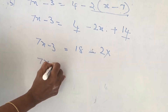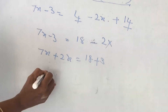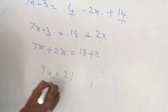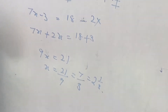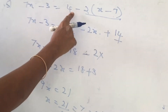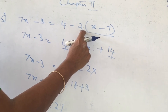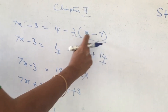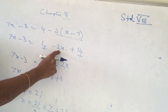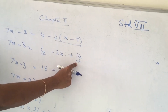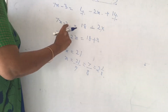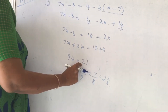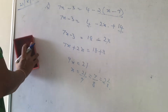Bring x terms to the left side and numbers to the right side. 7 plus 2 gives 9x. 18 plus 3 gives 21. x is equal to 21 by 9, that is equal to 7 by 3.